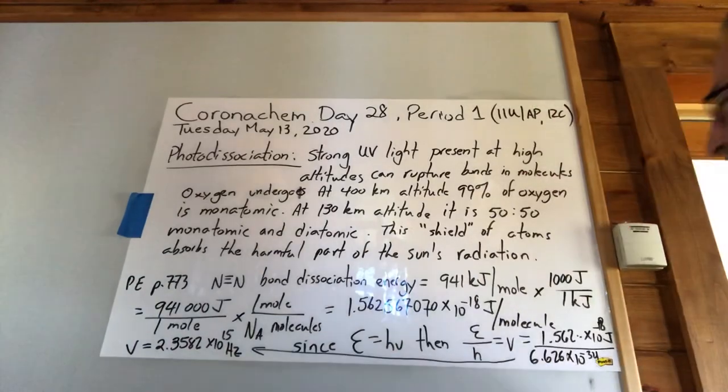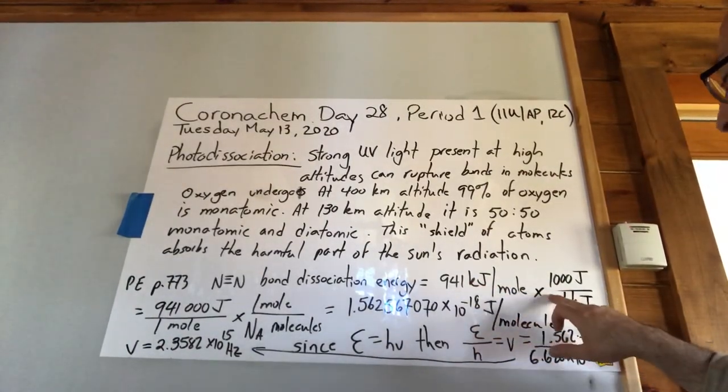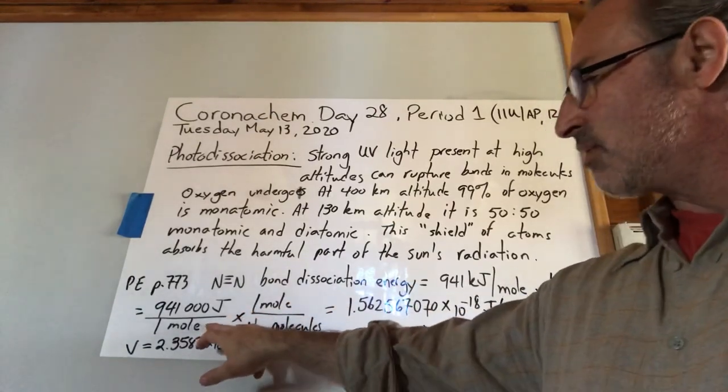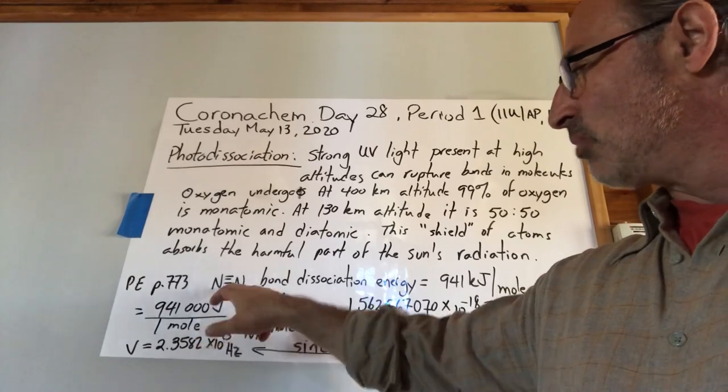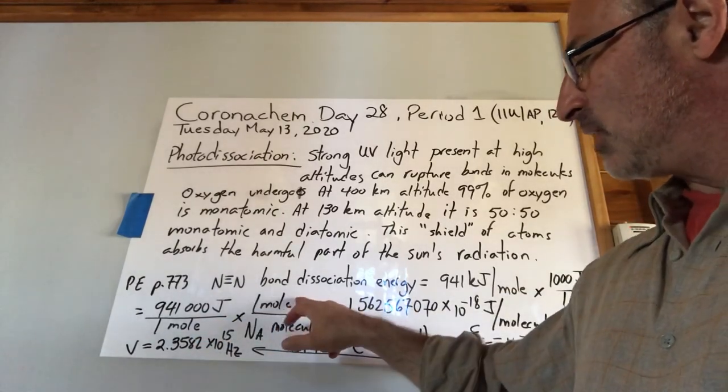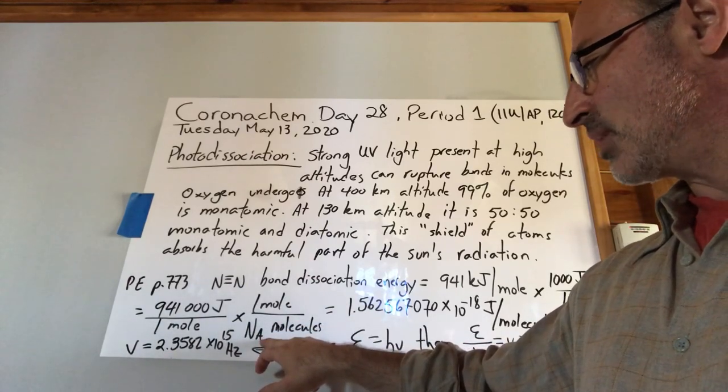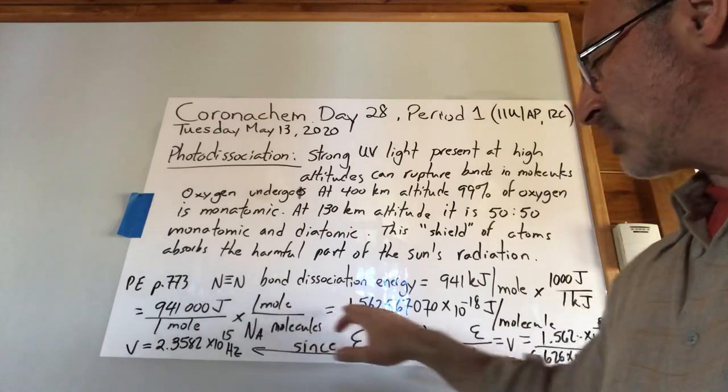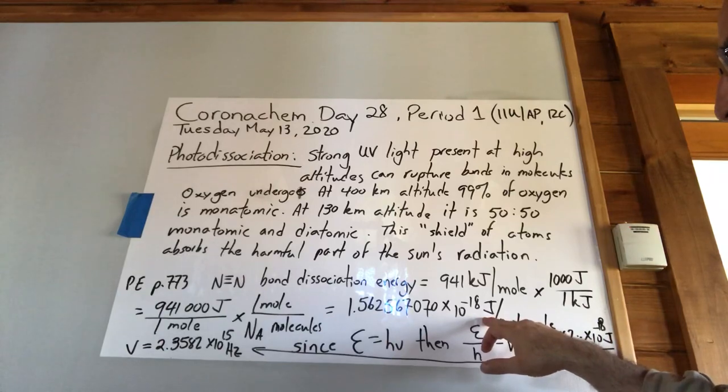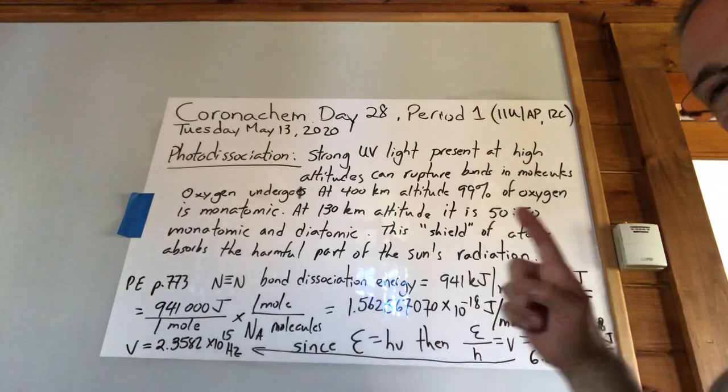It says, what is the longest wavelength a photon can have and still have sufficient energy to dissociate nitrogen? I started a calculation by converting 941 kilojoules per mole into joules per mole. So we know there's a thousand joules per kilojoule. That gives you 941,000 joules per one mole of nitrogen atoms. Then we found out how many atoms there are in one mole. It's Avogadro's number 6.02 times 10 to the 23 molecules per one mole. So that means that for every single atom, it takes that many joules to break the bond. 1.56 times 10 to the negative 18 joules per one molecule.